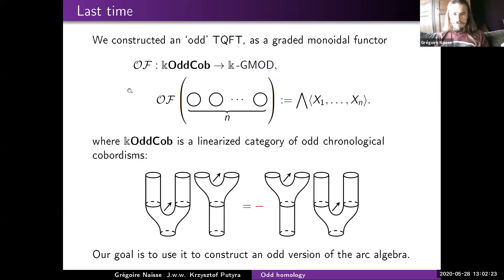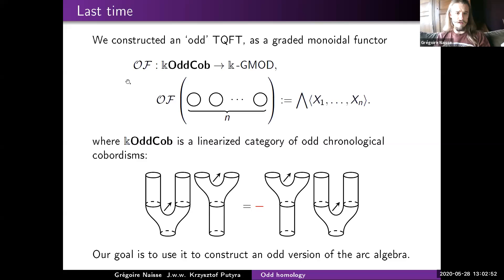Let me quickly remind you what happened last time. For Khovanov homology, you start with some link, smooth all crossings one way or another, then build cobordisms between these smoothings, giving you a cube of resolutions. The faces of this cube commute because you are exchanging distant saddle points between cobordisms. If you apply some TQFT on this, you get a commutative cube of vector spaces, and by introducing signs you can turn it into an anti-commutative cube — a complex. For a particular rank-two Frobenius algebra, you get Khovanov homology, which is a link invariant.